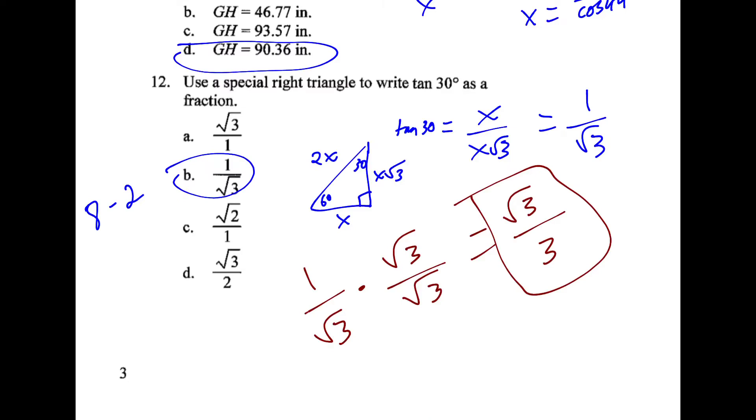For number 12, we set up our triangle like this. X is across from 30. Across from 90 is 2x. Across from 60 is x root 3. So the tangent of 30 is going to equal x over x root 3. The x's cancel out and we have 1 over root 3. The answer is b. You might be thinking we have to rationalize the denominator. We did cover that in class. So we multiply by root 3 over root 3. The problem is we end up with root 3 over 3, not root 3 over 1 or root 3 over 2. So that answer is not on here. That's why b is correct.